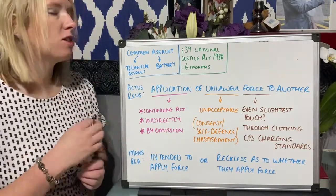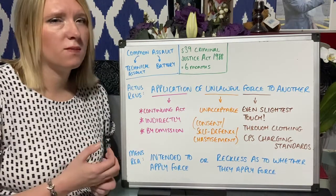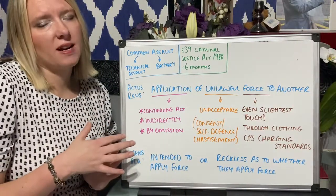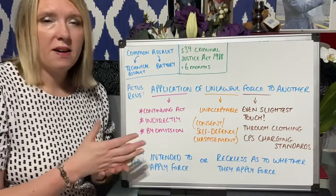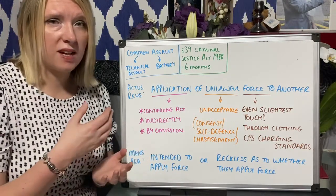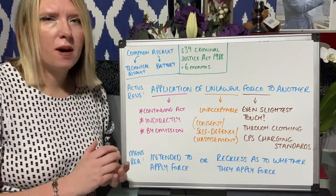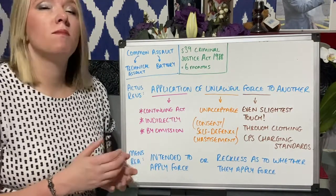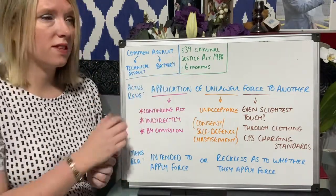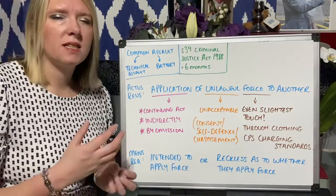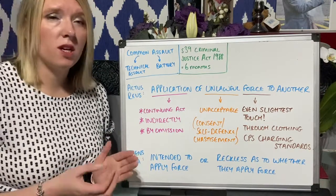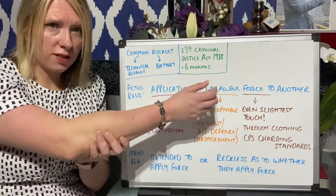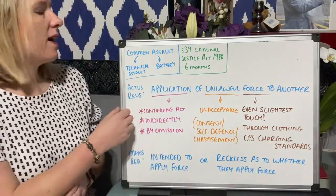It can be seen through a continuing act. We've seen this in the case of Fagan v Metropolitan Police Commissioner, where the defendant accidentally parked on the police officer's foot. There was an actus reus because he'd applied unlawful force to the police officer, but no mens rea initially. When asked to move, the defendant refused and stayed parked on the officer's foot. He eventually moved off and denied being guilty of assaulting a police officer. The court said it can be a continuing act — so if someone grabs your arm, that initial application of force continues as long as they won't let go.